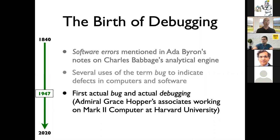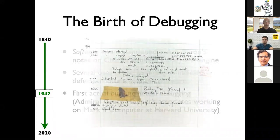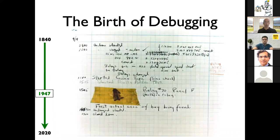They were working on the Mark II computer at Harvard University, and they found an actual moth in a relay, and that was causing a malfunction. I also happen to have the picture of the bug report here, and never has a name been more appropriate than 'bug report' in this case, because you have a moth taped into the report.